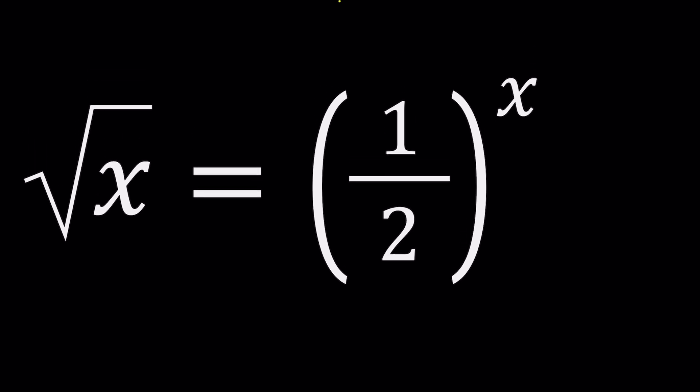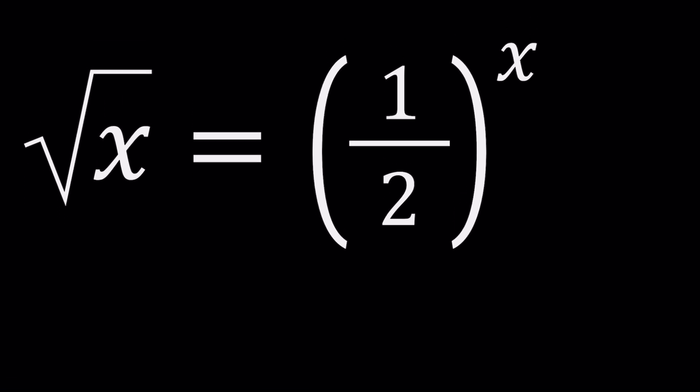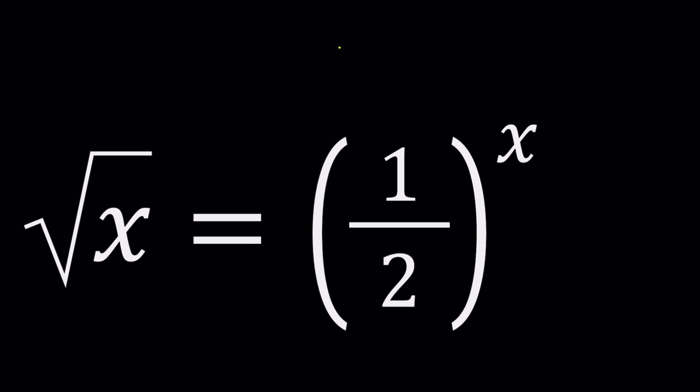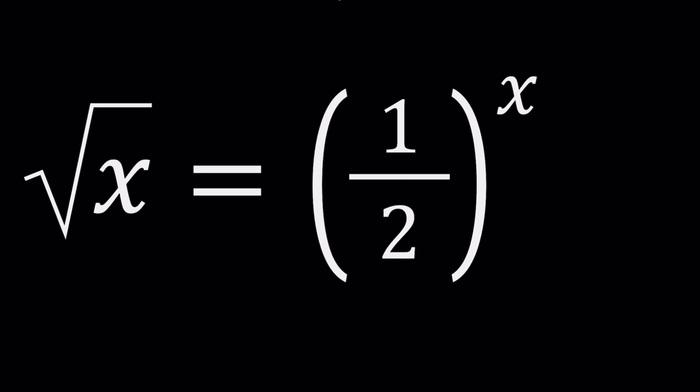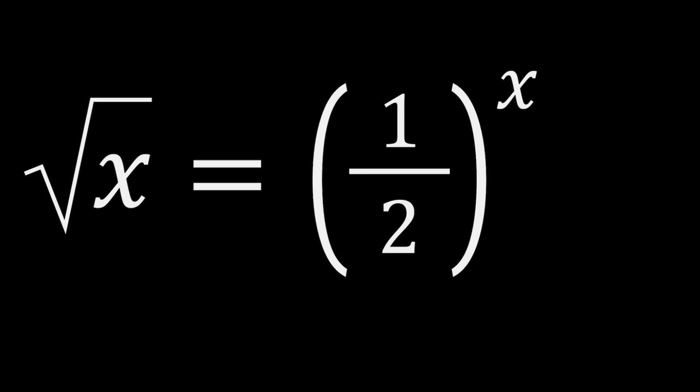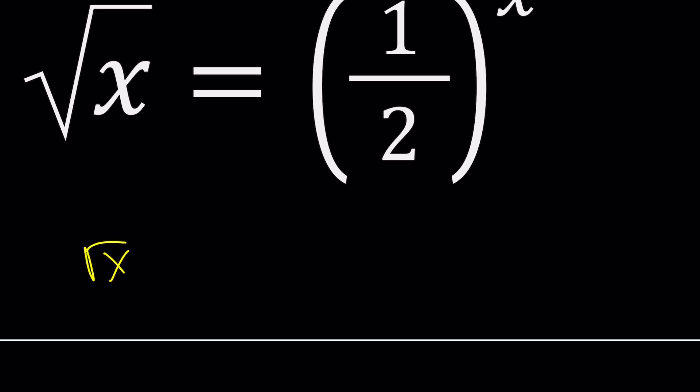We have square root of x equals one half to the power x. The first thing I want to do is bring these things on the same side and to be able to do that I'm actually going to either divide both sides by square root of x or divide by one half to the power x. I'll probably just bring this one half to the x over because it already has a negative exponent. If you think about it one half to the power x can be written as two to the power negative x.